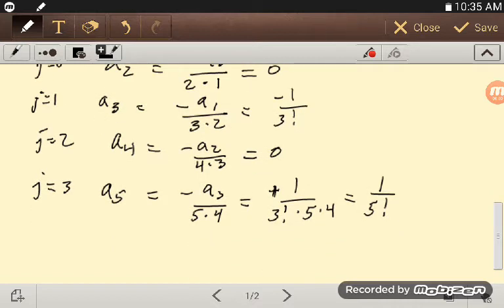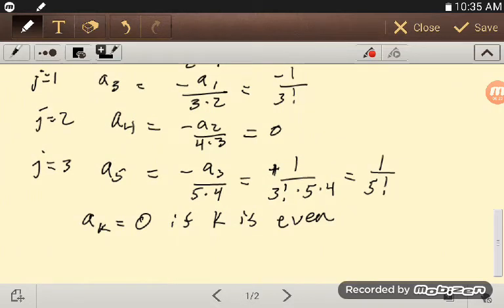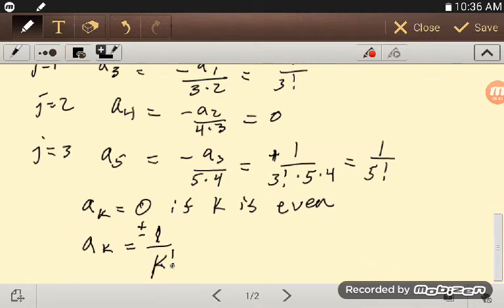And so notice what I'm going to get is any given k is going to be equal to 0 if k is even. And although I'm not absolutely sure from just doing these few, but I am sure because I know what the answer is. If I look at another a sub k, for when it's odd, I'm going to get plus or minus 1 over k factorial, when k is odd.